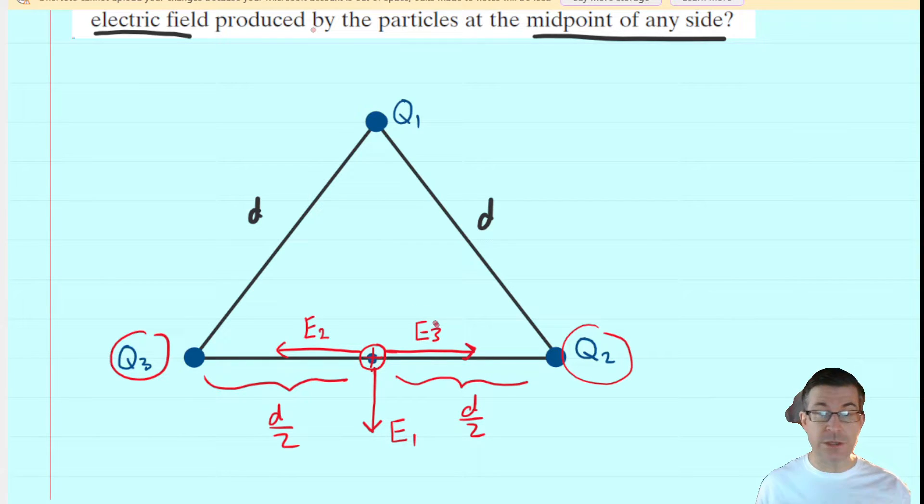Therefore, the magnitude of E2 and E3 are also going to be the same. And therefore, they're going to cancel each other out. Because E2 is going to the left and E3 is going to the right, they would vectorially cancel each other out. So we're just going to get rid of them.